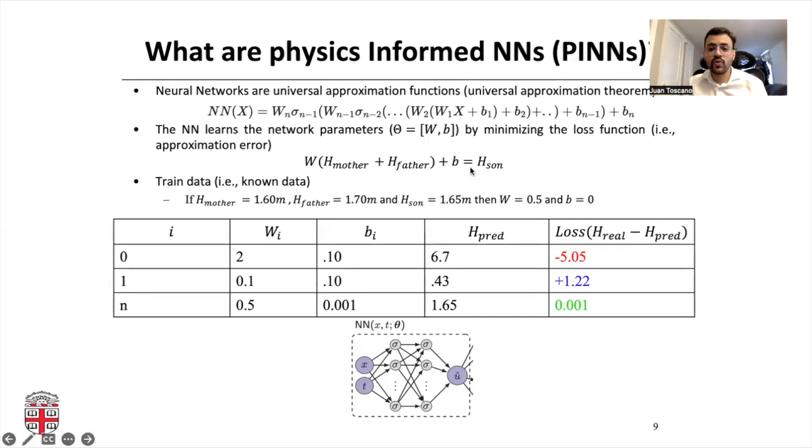For instance, let's assume that we want to know the height of the son based on the height of the mother and the height of the father. Initially, the model will assign some random values. Let's say the weight here should be two and the bias should be 0.1. You can see that when we compute the prediction is 6.7 meters, but the actual height of the son is 1.65. So you see that you have a negative error. Since we have a negative error, the model will know that you have to reduce the value. Now it gives 0.1 and now the error is positive and they will go back and forth until they find the right parameters.